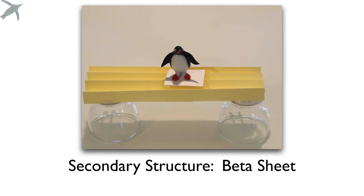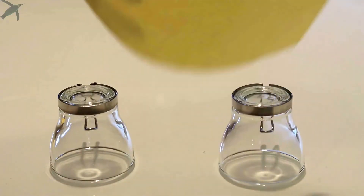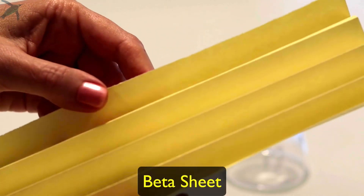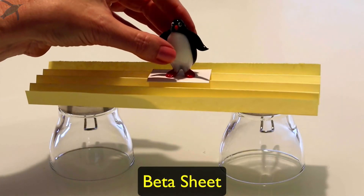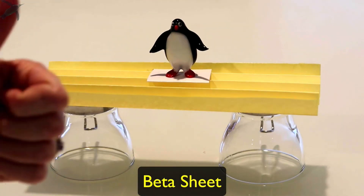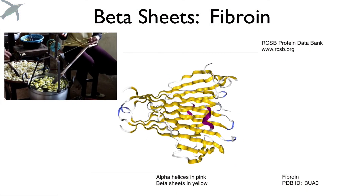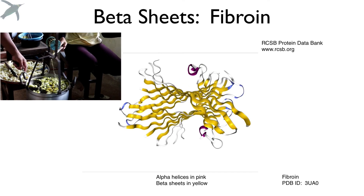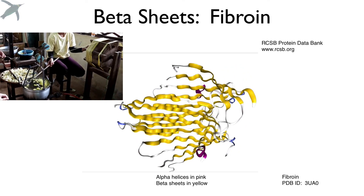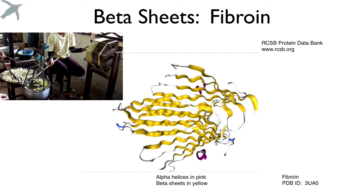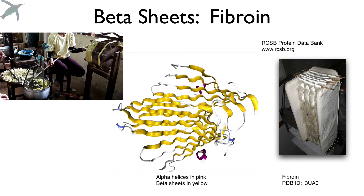Let's look at beta sheets. With just the primary structure, it's like a flat piece of paper with no strength. But if I fold the paper into a beta sheet, same size paper, I get a lot more structure and rigidity. Beta sheets are what accounts for the strength of the fibroin protein that makes up silk. Not only do all these beta sheets give it the tensile strength silk has, but the shape of the beta sheets accounts for the way light reflects off silk, giving it that beautiful luminous quality.